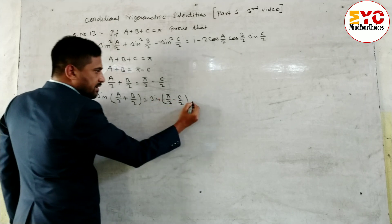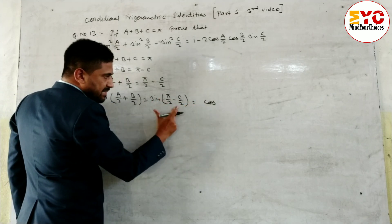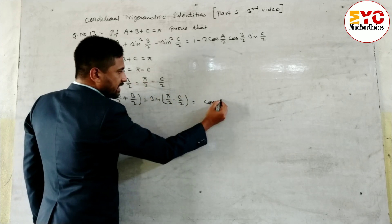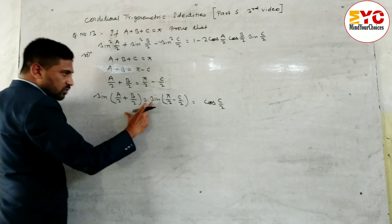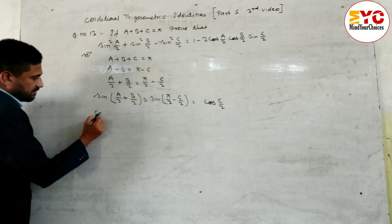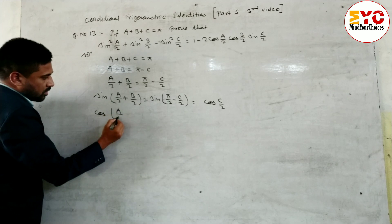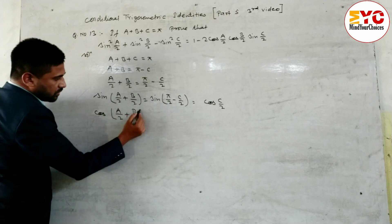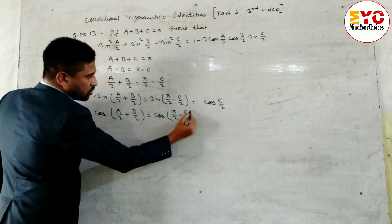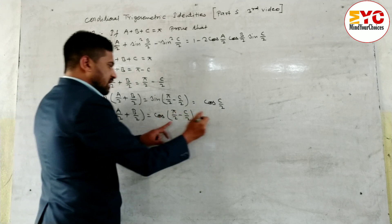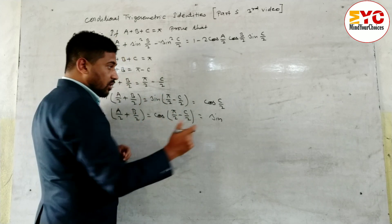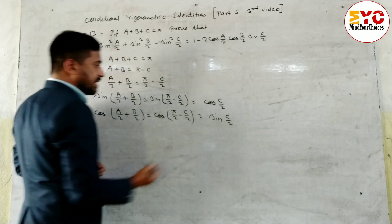Since 90 minus theta converts sin to cos, and in the first quadrant all values are positive, sin(pi by 2 minus c by 2) equals cos(c by 2). Similarly, taking cos both sides: cos(a by 2 plus b by 2) equals cos(pi by 2 minus c by 2), which converts to sin(c by 2).